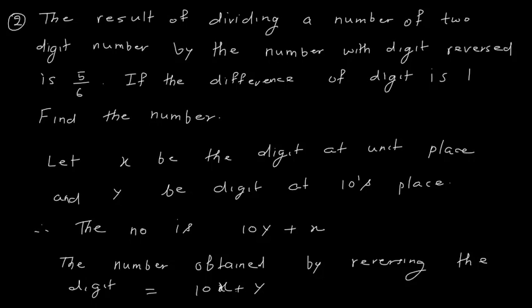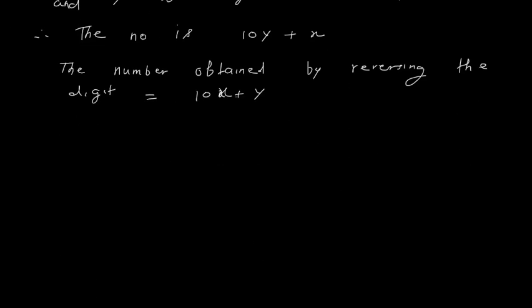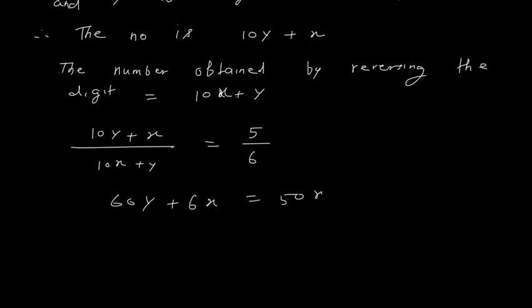It is given that if I divide the number by the number with digits reversed, I get 5 by 6. That means (10Y plus X) divided by (10X plus Y) equals 5 divided by 6. Simplifying: 60Y plus 6X equals 50X plus 5Y. Bringing everything to the left: 55Y minus 44X equals 0.